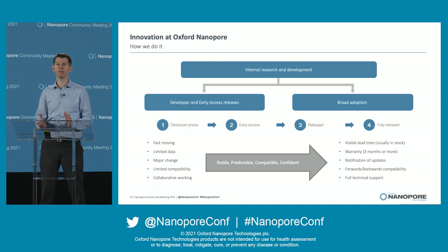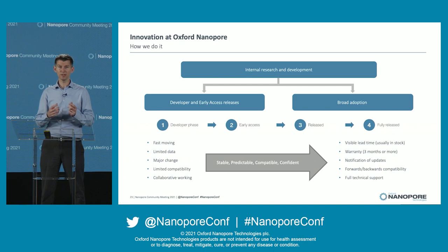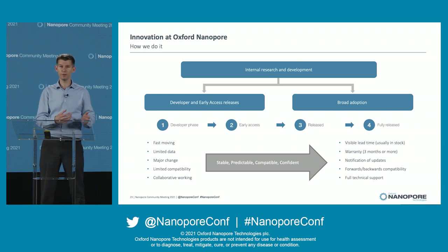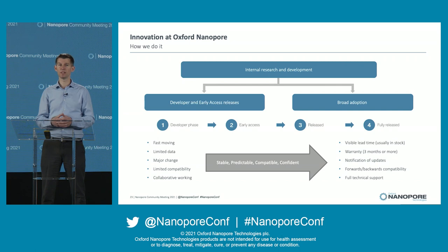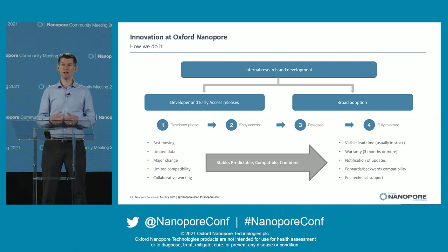I'm going to talk primarily about accuracy, but first I'd like to take a quick diversion to talk about innovation at Nanopore. Innovation is at the heart of everything we do at Nanopore. Innovation means change, and change can be disruptive — but it doesn't have to be. We have a process designed to manage both disruptive changes, which we handle through developer and early access style programmes, and continuous improvement — seamless background changes for our broad adoption products. When we're doing a major step change, we'll run that in a developer programme — we can be fast moving and we're looking for a collaborative working relationship with the community. As things become more stable and predictable, we move those through into released and fully released phases, with visible lead times, warranties, notifications of changes, and full technical support.